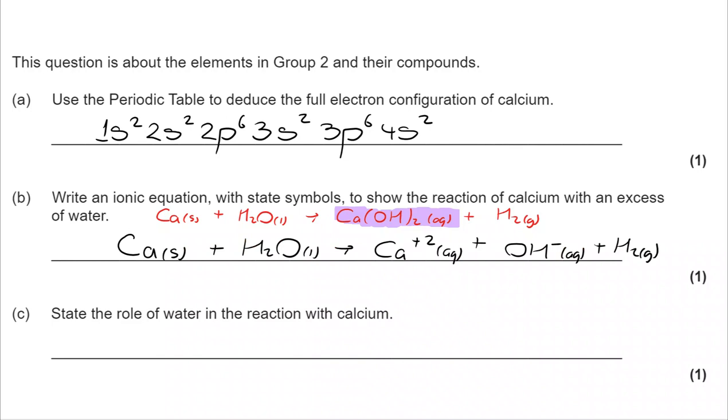So for the final answer, we take our calcium, water, and hydrogen and leave them as they are. But we break the calcium hydroxide up into Ca plus 2 and 2OH minus. And that will also need the state symbols.